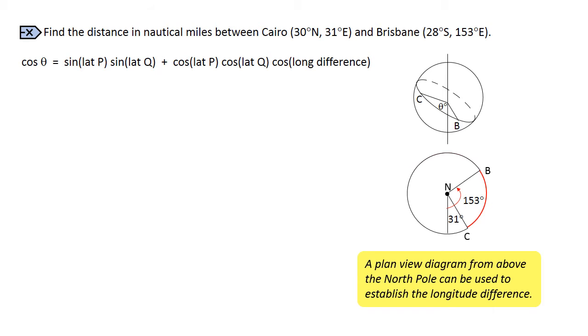Now we pop it into the formula along with the latitude information. Remember that southern latitudes are entered as negative and then we let our calculator do the work to find out θ. This of course is not the distance, and to find the distance we need to substitute it into the formula D equals 60θ to find the distance in nautical miles.